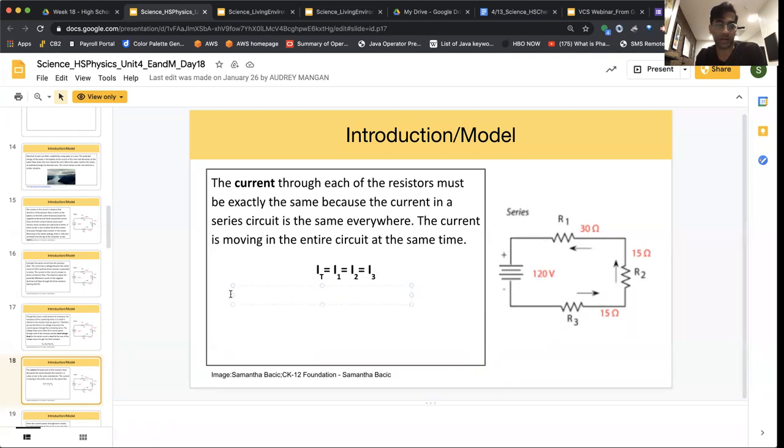Now I'm going to erase this and write out that definition. You'll see this in your reference table as well. For series circuits, we know that V is going to be divided by RT, which is our total resistance, is going to equal our current.